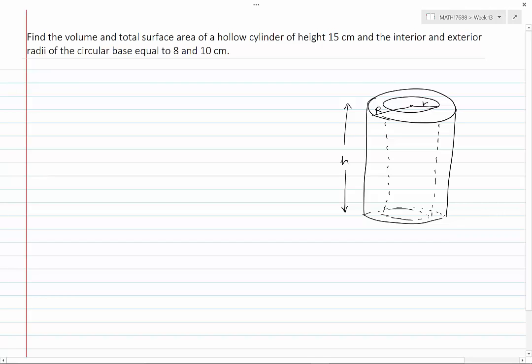To find the volume, I find the total volume, which is the volume of a cylinder, and I subtract the volume of the cylindrical hollow inside the original cylinder. The volume, therefore, becomes pi capital R squared times h,